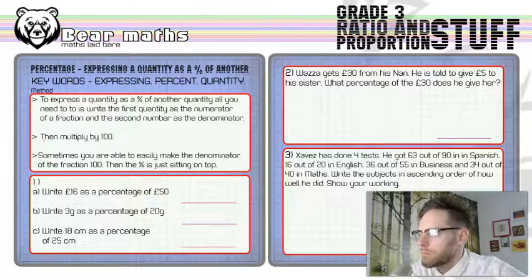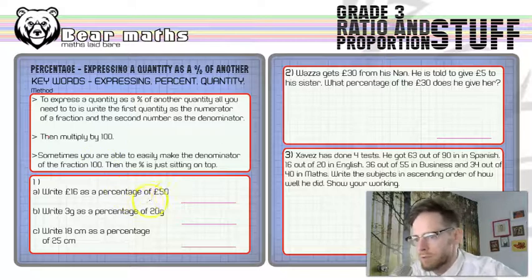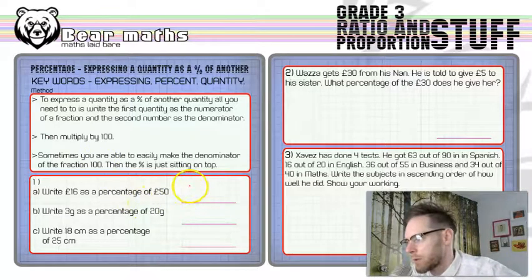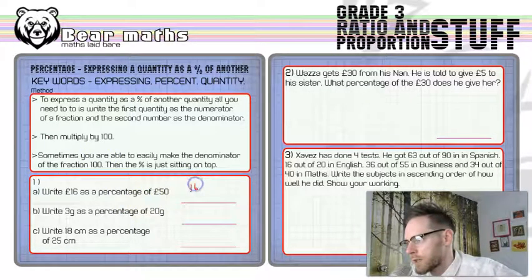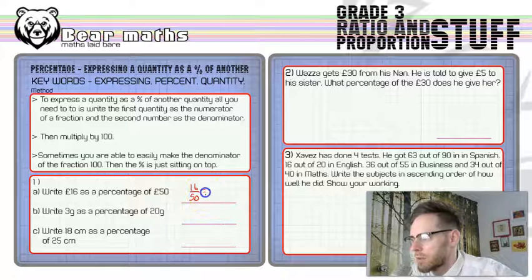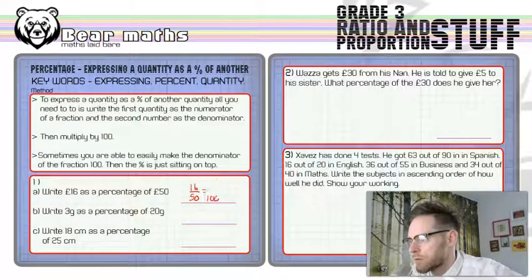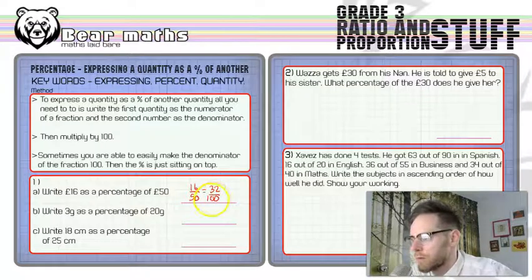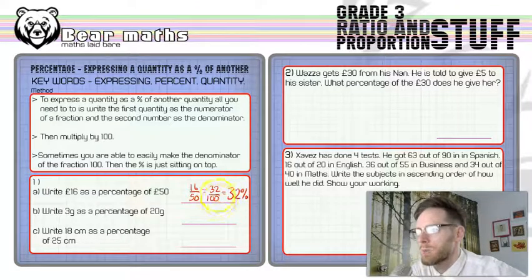So number one, we've got to write 16 pounds as a percentage of 50. This is one we can do without a calculator. You pop the 16, that's the first quantity, out of 50, and then we want it as a percentage. So that's going to be equal to something out of 100, and that's going to be 32 because all I've done is double 50 and double 16. So that means we've got 32 percent because we're able to make it 100 on the bottom.